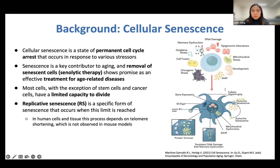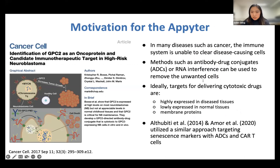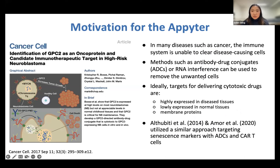Similar to cancer, senescent cells become pathological when they start being able to evade clearance by the immune system. In normal senescence processes, they should be routinely cleared. As a result, there's been a lot of interest in senolytic immunotherapy to treat age-related conditions. But a big challenge for immunotherapy in general is being able to identify cell surface proteins that can actually facilitate targeted cell removal — for instance, using ADCs or CAR T cells.